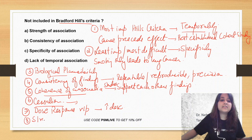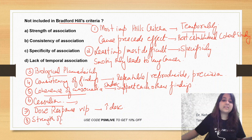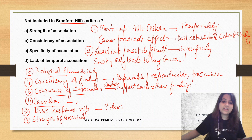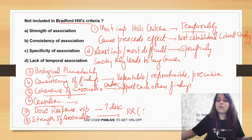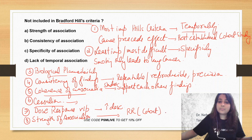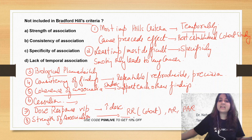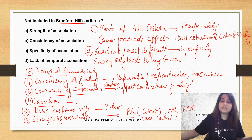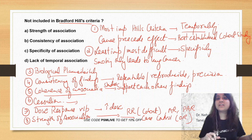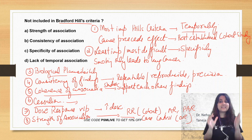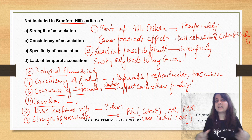Then there is S — strength of association. The strength of association is given by relative risk in a cohort study, and attributable risk and population attributable risk also in a cohort study. But in a case-control study, it is given by odds ratio. Remember, sensitivity is not a part of Hill's criteria.